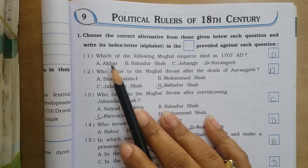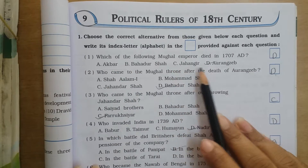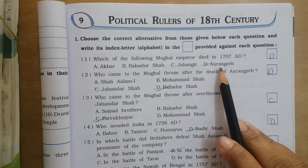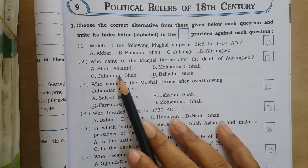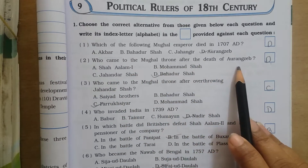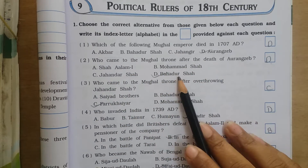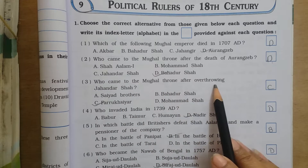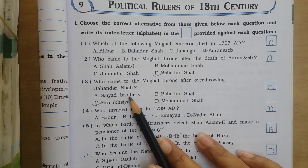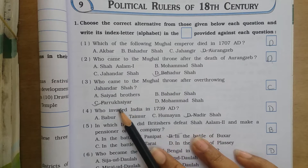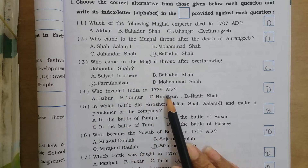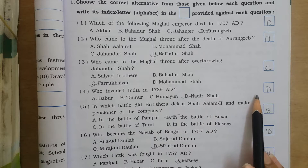First are MCQs. Which of the following Mughal emperors died in 1707 AD? It is Aurangzeb. Who came to the Mughal throne after the death of Aurangzeb? It is Bahadur Shah. Who came to the Mughal throne after overthrowing Jahandar Shah? It is Farrukh Siyar. The answer is C. Who invaded India in 1739 AD? It is Nadir Shah.